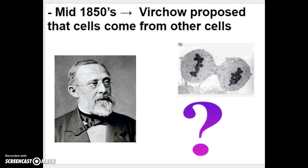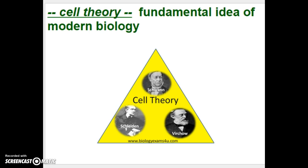Then, fast forwarding to the mid-1850s, Virchow proposed the idea that cells must come from other cells. He wasn't sure of the process, but cells had to come from somewhere, and all living things seemed to have them. He proposed the idea of cell division but did not describe it. These three gentlemen contributed to the cell theory, which is one of the fundamental ideas of modern biology.